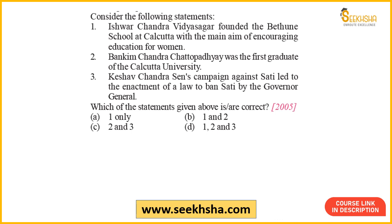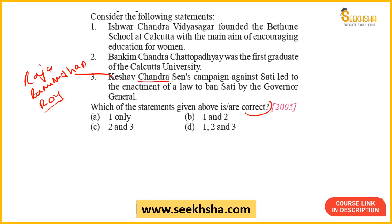This is a slightly confusing but ultimately easy question. The sati-related statement is basic knowledge for any serious candidate who has studied history. It was not Keshav Chandra Sen — it was Raja Ram Mohan Roy who gets the credit for the enactment of the sati ban. So statement three is completely wrong, which means options containing statement three can be eliminated straightaway.